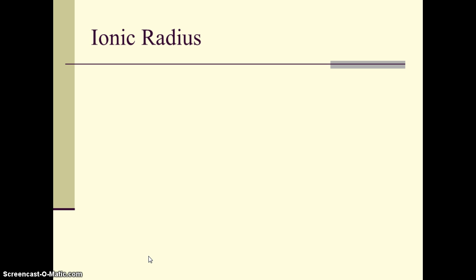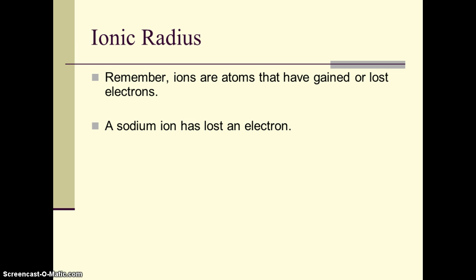Atoms form ions by gaining or losing electrons. Sodium atom, for example, will lose an electron to be a sodium ion. And by losing an electron, it's losing its outside level, and that makes it small compared to the atom. If we look at sodium on the periodic table, it has one S electron in that outside level. If it loses that one electron, the whole level is gone.